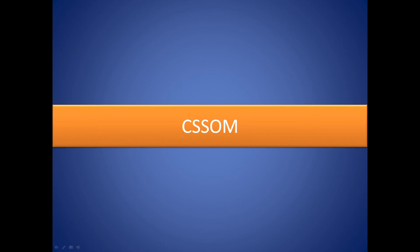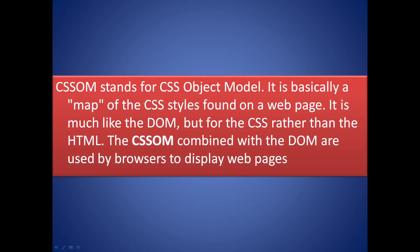Now let's cover the CSSOM. CSSOM stands for CSS Object Model. It is basically a map of the CSS styles found on a web page, and it is much like the DOM but for CSS rather than HTML. The CSSOM combined with the DOM are used by browsers to display web pages.